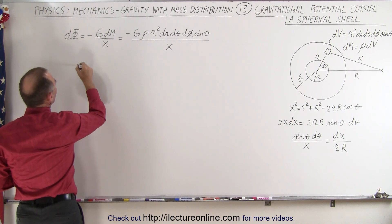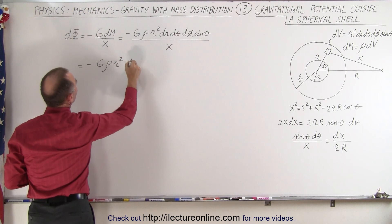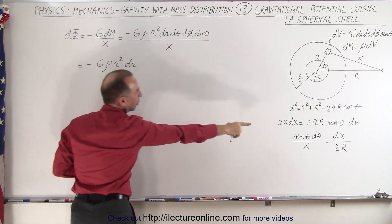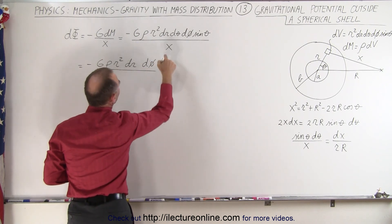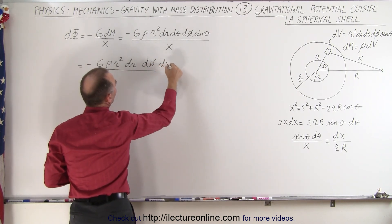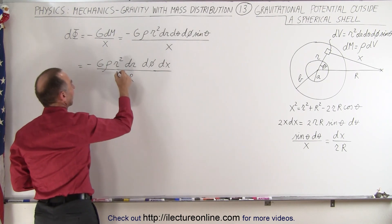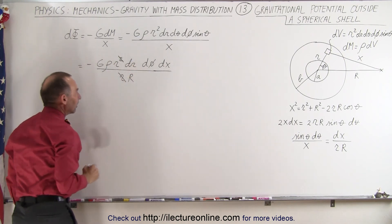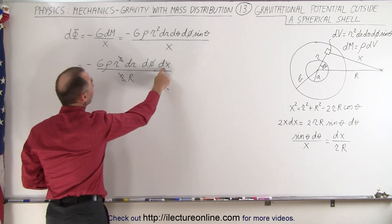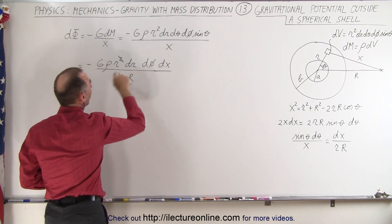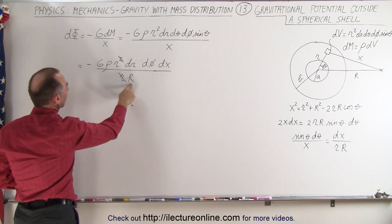After the substitution, this becomes −G ρ r² dr dφ · dx / (rR), and the small r cancels with the r in the denominator. Now we're ready to integrate over x, over φ, and over r. G, ρ, and capital R are constants and can come outside the integral.